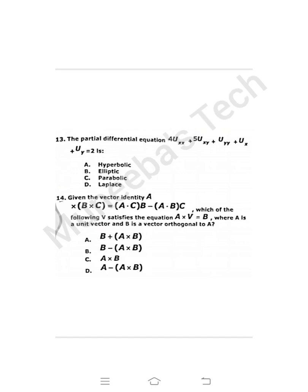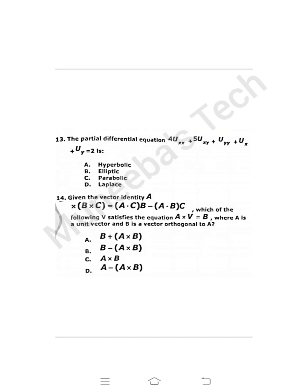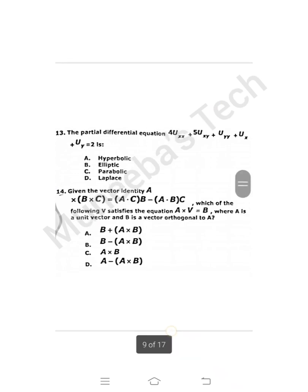Question 14: Given the vector identity a × (b × c) = (a·c)b - (a·b)c. In my opinion option C is correct but I'm not sure about that. If any of you know the correctness then most welcome, you can tell me.